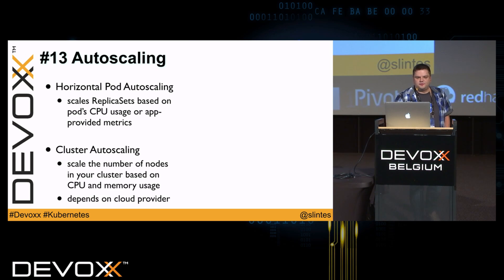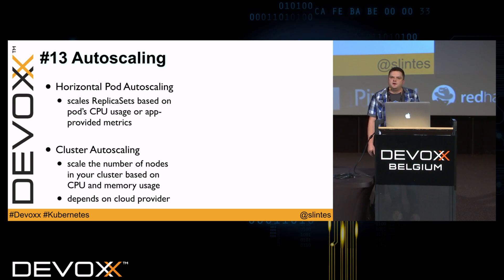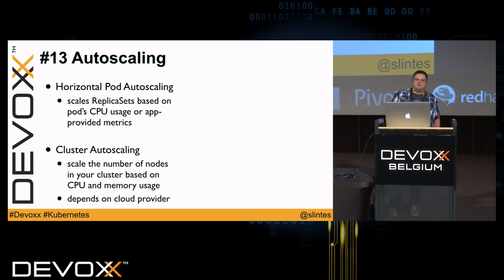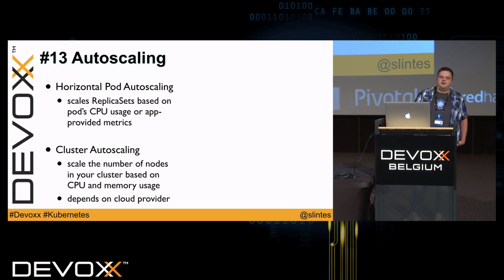The next interesting thing is auto scaling. There are currently two types. The first is horizontal pod auto scaling, where a replica set scales itself based on CPU usage of its pods or application-defined metrics. The other is cluster auto scaling, provided by cloud providers like Amazon or Google, which starts new virtual machines for your cluster when CPU and memory usage is too high.